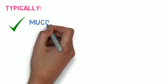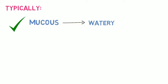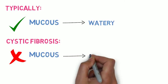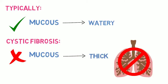Typically, mucus produced by the body is watery, but in cystic fibrosis, the mucus is thick, which causes it to accumulate and block airways.